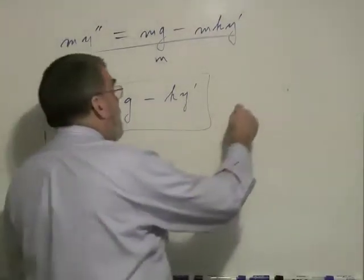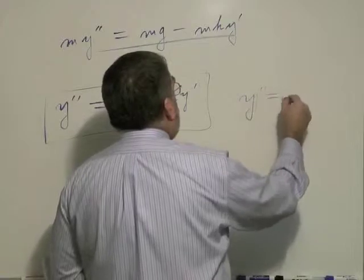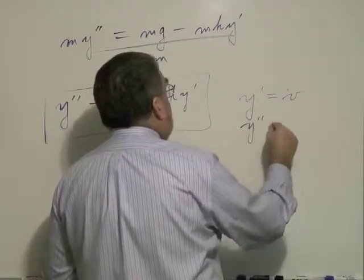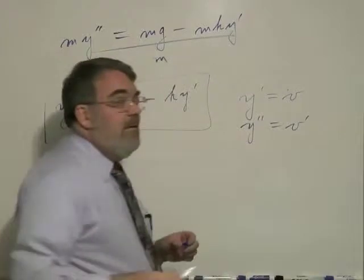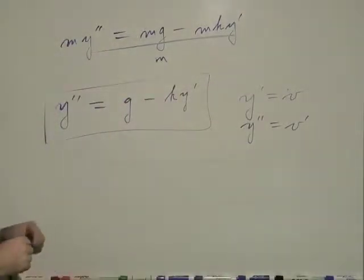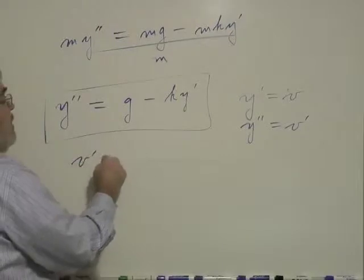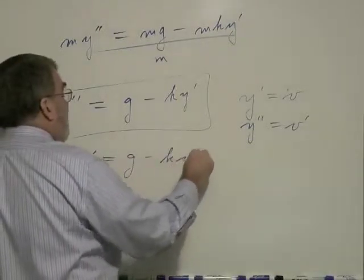Because you consider that y prime is velocity, and y double prime is the derivative of velocity, v prime. So I can rewrite this as v prime equals g minus k v.